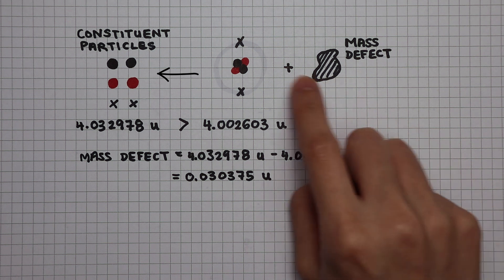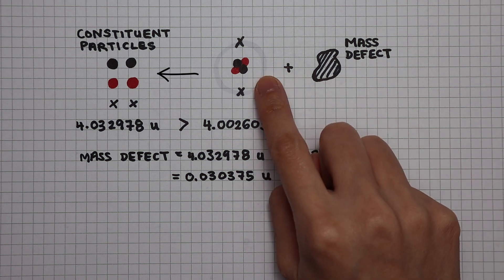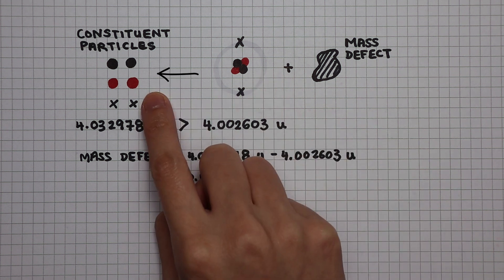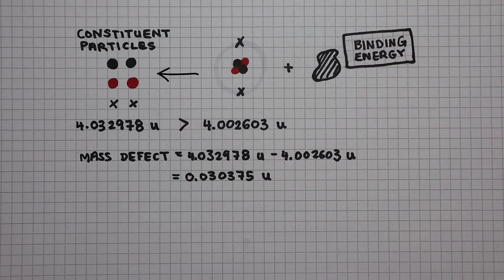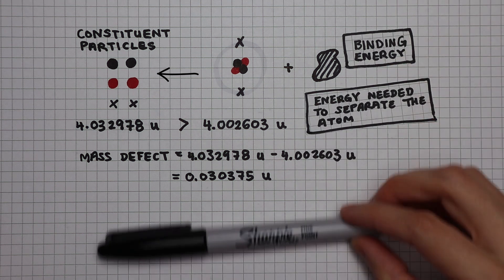So with a little bit of energy added to the atom, we can pull the particles apart and separate them into constituent parts. The energy provided by the mass defect to separate the atom into constituent is known as the binding energy. It's a term that sounds quite counterintuitive.